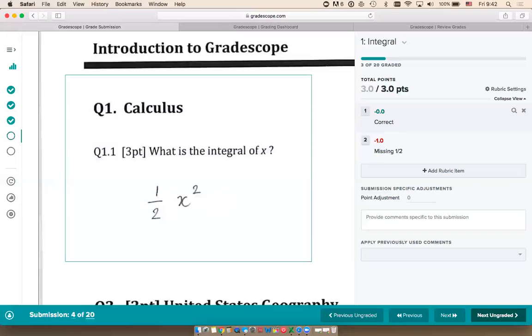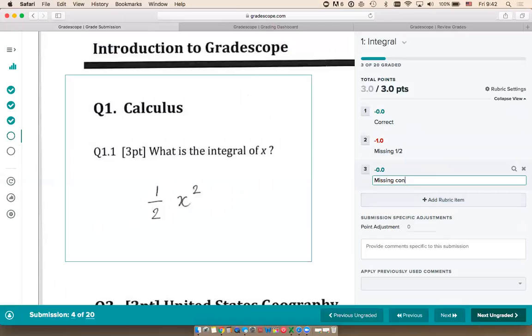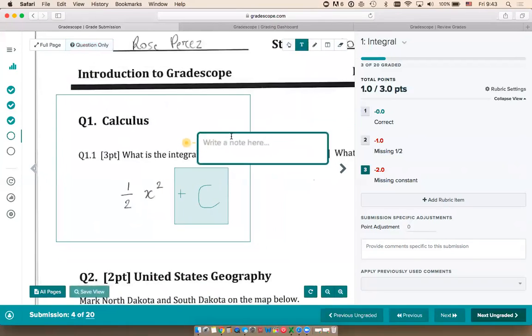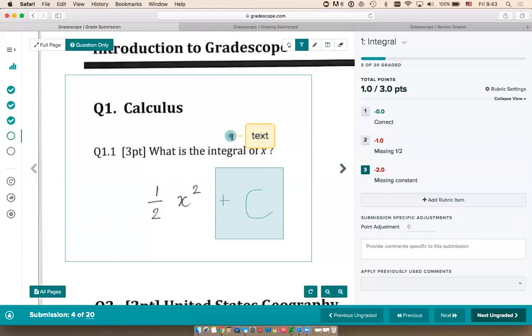The student made a new kind of mistake—they're missing the constant. I'm going to add a rubric item and type a description. Let's say this is a bigger deal, so we're deducting two points. I select the rubric item. If I want to write directly on the student's submission, I can use annotation tools: a pen tool for freehand writing, a box tool to highlight parts of the submission, and a text annotation tool to type comments. I can extend the arrow to point to specific parts.